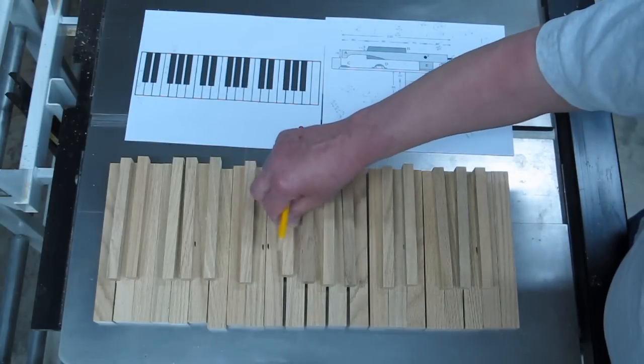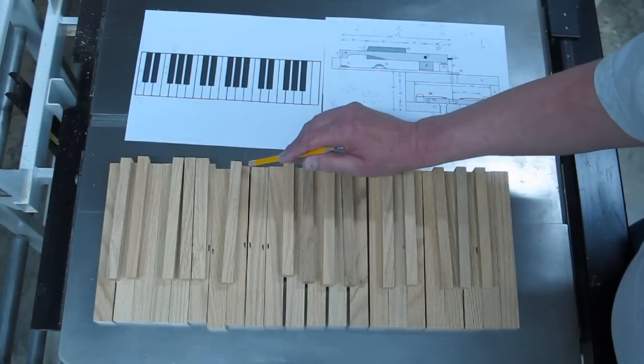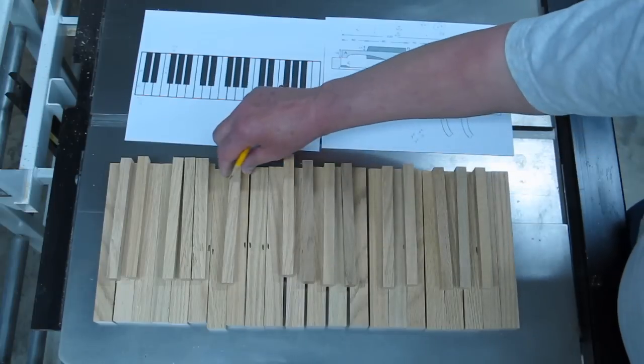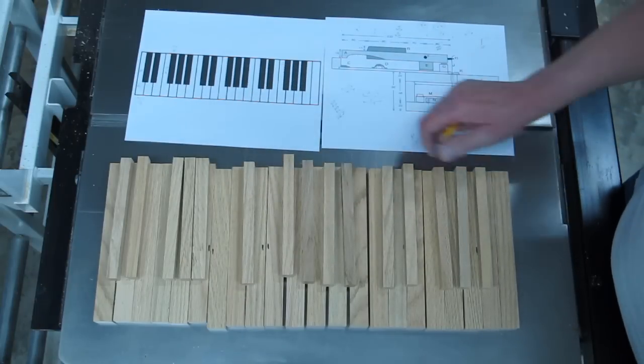So now, I have to make a jig that will allow me to cut the notches in these white keys and clear the lower part of the black key, and I want to do that on the table saw.